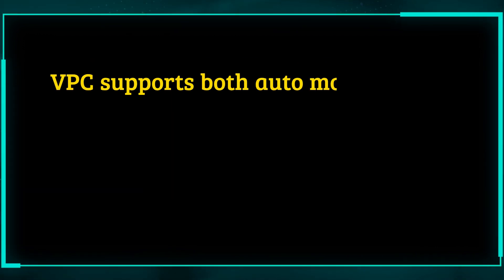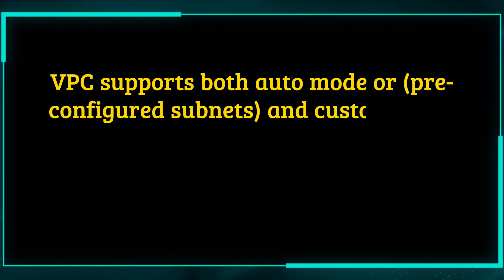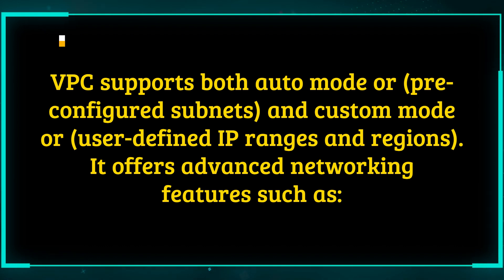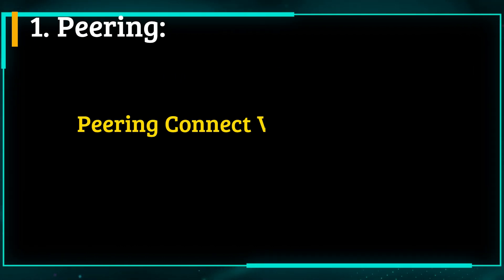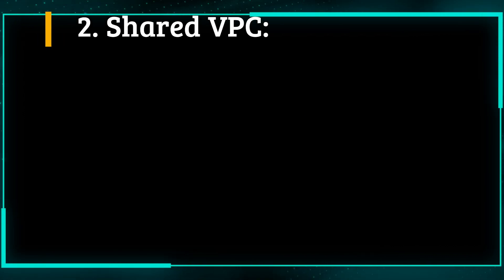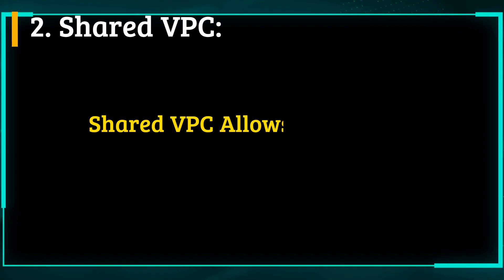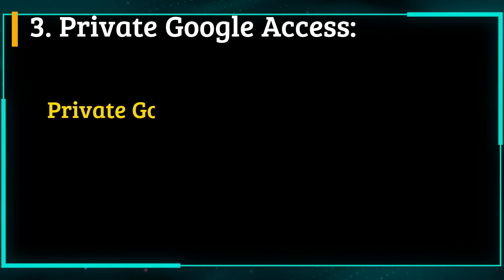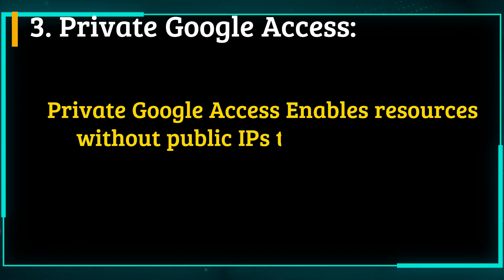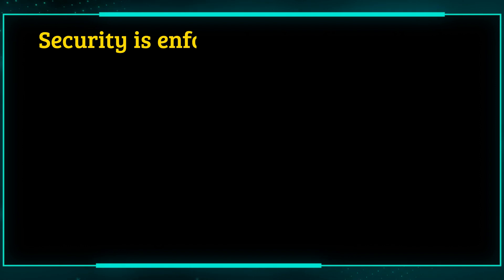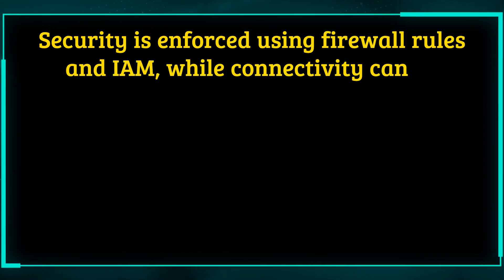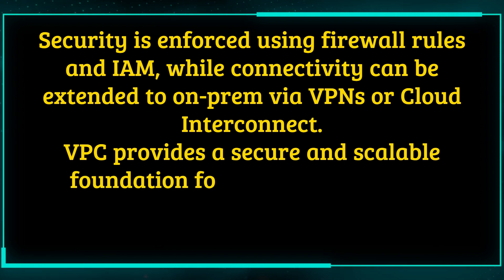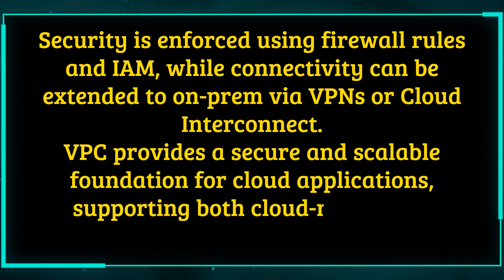VPC supports both auto-mode with pre-configured subnets and custom-mode with user-defined IP ranges and regions. It offers advanced networking features such as: 1. Peering, which connects VPCs across projects or organizations. 2. Shared VPC, which allows multiple projects to share a common VPC. 3. Private Google Access, which enables resources without public IPs to access Google services securely. Security is enforced using firewall rules and IAM, while connectivity can be extended to on-premises via VPNs or Cloud Interconnect. VPC provides a secure and scalable foundation for cloud applications, supporting both cloud-native and hybrid architectures.